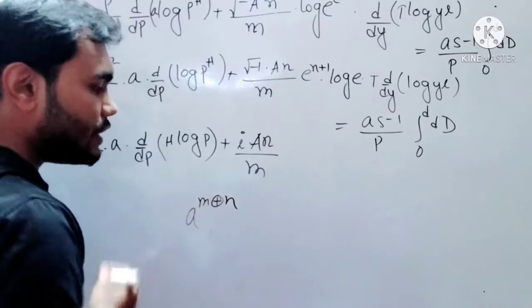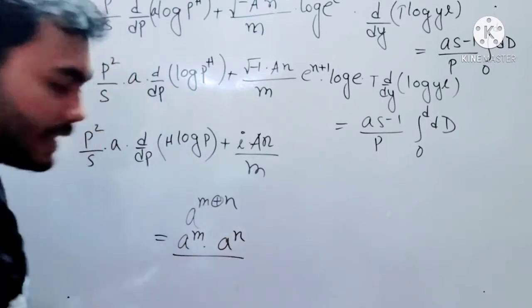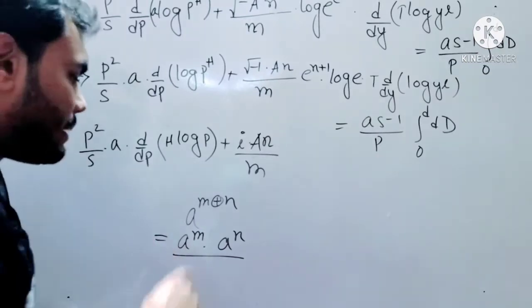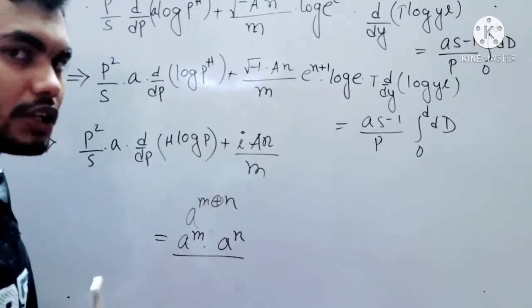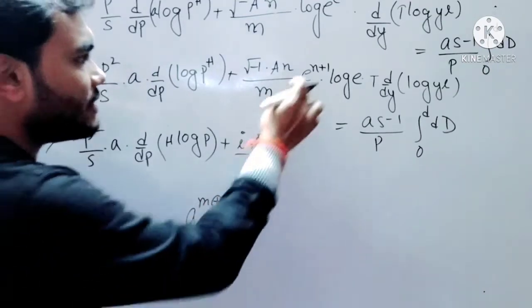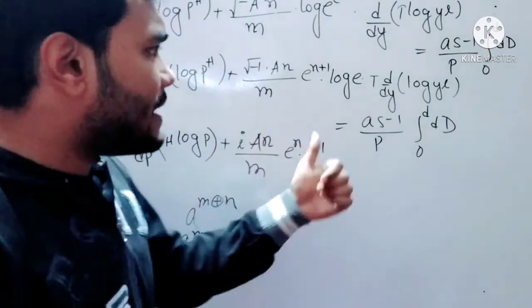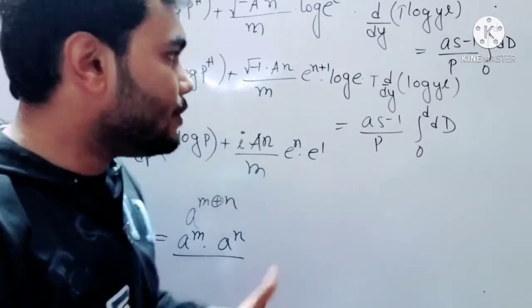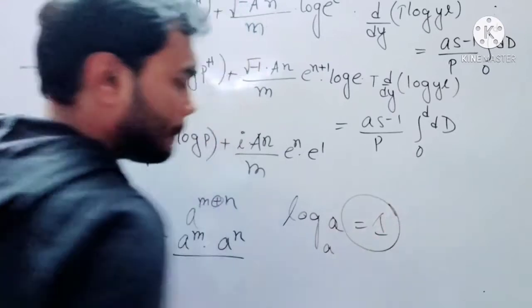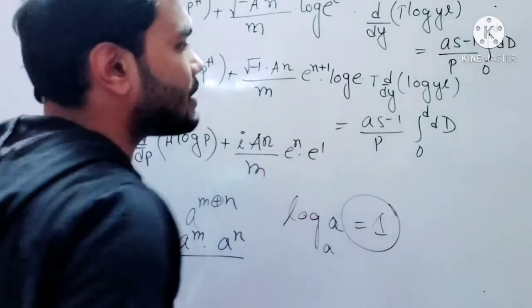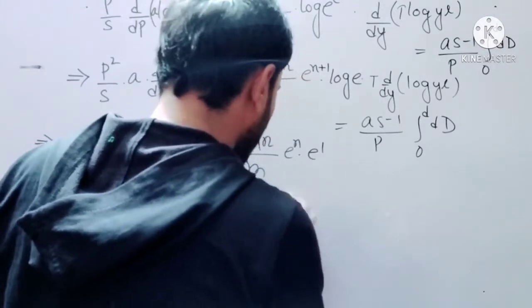From the laws of indices — learned in class 9 — a to the power (m plus n) equals a to the power m times a to the power n when the bases are the same. So e to the power (n plus 1) becomes e to the power n times e to the power 1. Also, when no base is written for log it is treated as base e, and log base e of e equals 1. So log e gives us 1.